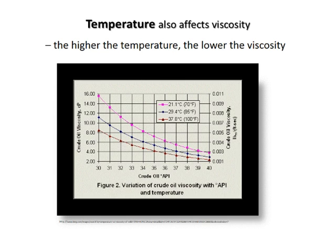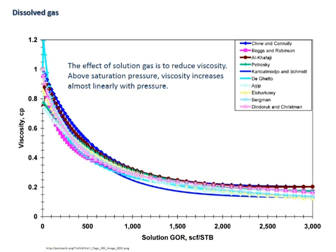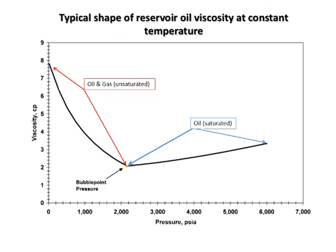Temperature also affects viscosity — the higher the temperature, the lower the viscosity. Dissolved gas can also affect viscosity; the effect of solution gas is to reduce viscosity. Pressure has an effect on viscosity as well. For most liquids, viscosity increases with increasing pressure because the amount of free volume in the internal structure decreases due to compression. Consequently, the molecules can move less freely and the internal friction forces increase.